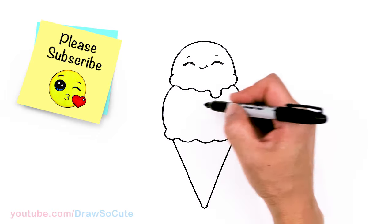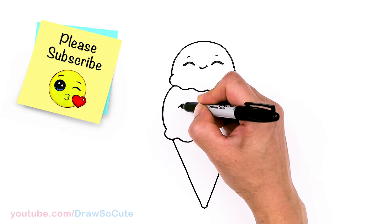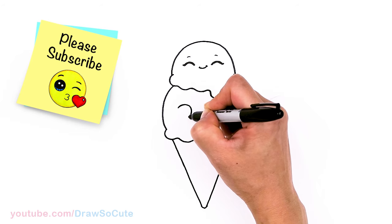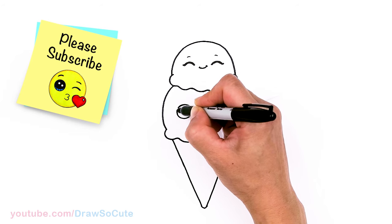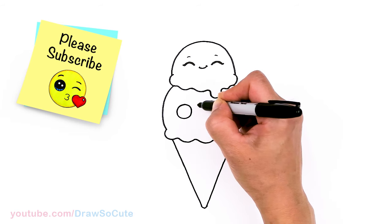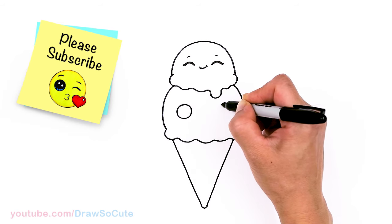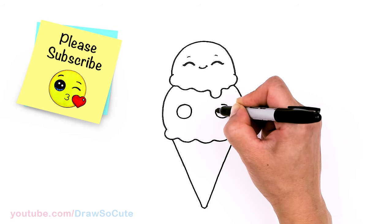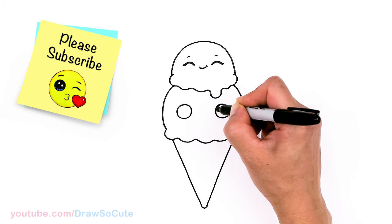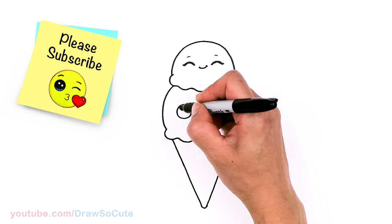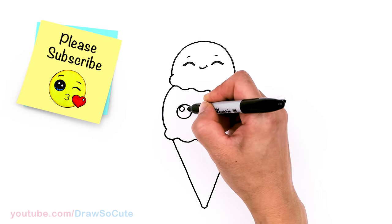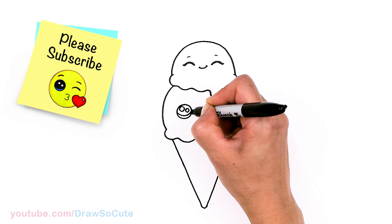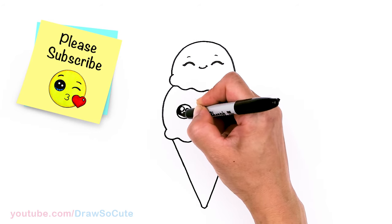And then let's work on the second scoop. So let's say about right here I'm going to draw a circle. So you can put in some Draw So Cute Eyes. And come right across about right here. And same thing. So let's make the Draw So Cute Eyes. I'm going to put two small circles inside for highlights and a curved line at the bottom. And shade in the top.